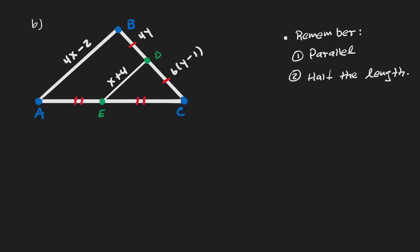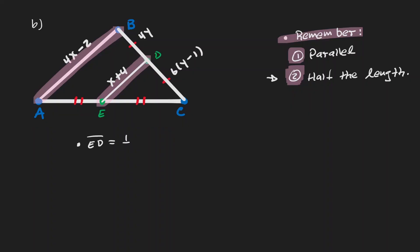Now that we know DE is a connection of those midpoints, recall that connecting midpoints gives us two properties: DE is parallel to the opposite side, and it is also half the length of its opposite side. The property we'll use to solve for x is that second one. So we know that ED is half of AB — ED is x plus 4 and AB is 4x minus 2.